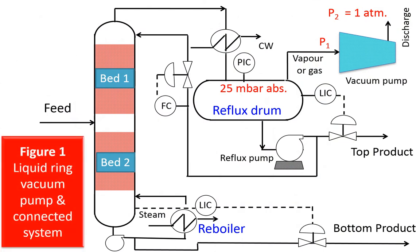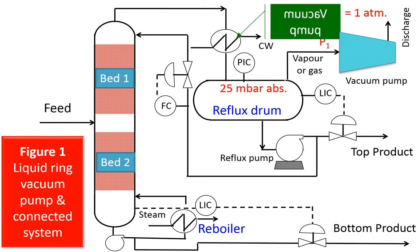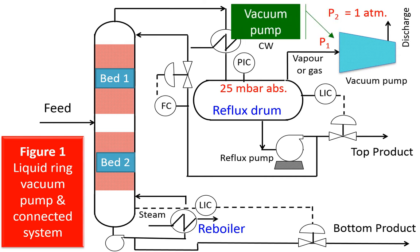This figure illustrates a vacuum pump connected to a distillation system. The liquid ring vacuum pump is connected to the reflux drum because it serves to remove the non-condensables and vapors from the reflux drum at sub-atmospheric pressure, compresses them, and discharges to atmosphere.